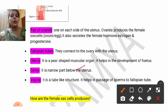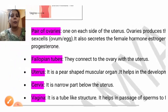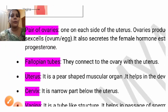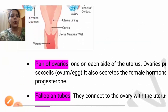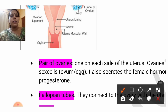The cervix is the narrow part — you should note this down. Here you can observe: the cervix is the narrow part of the uterus. And finally, this region is called the vagina.